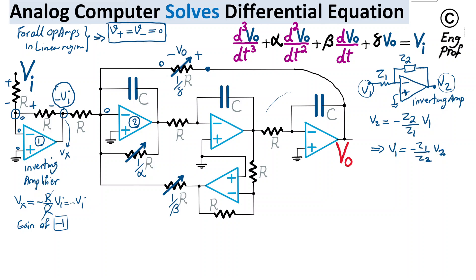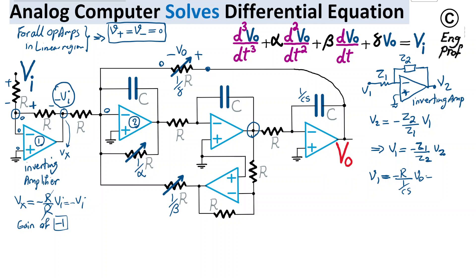Using this relationship, I can find the voltage at the input of the next inverting amplifier stage. V1 equals minus Z1 over Z2 times V2, where Z1 is R and Z2 is the capacitor impedance 1 over CS. So V1 equals minus R divided by (1/CS) times Vout, which gives minus RCS times Vout at that node.